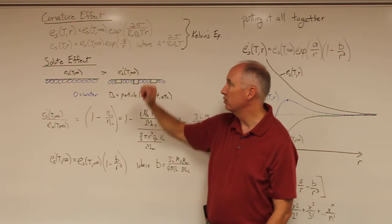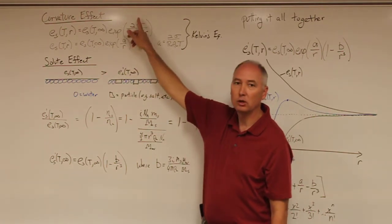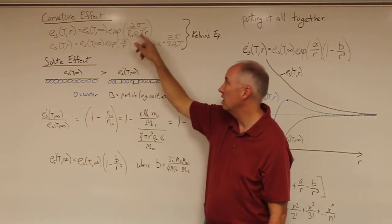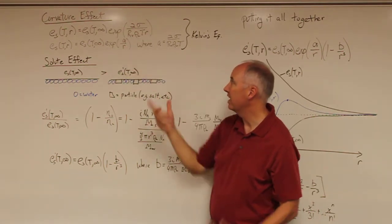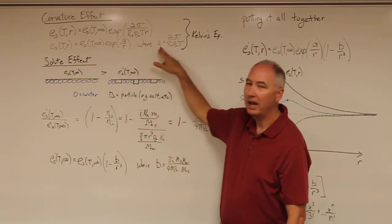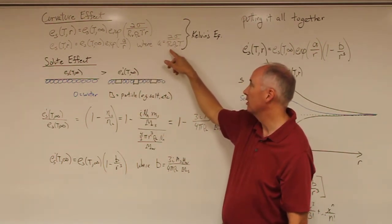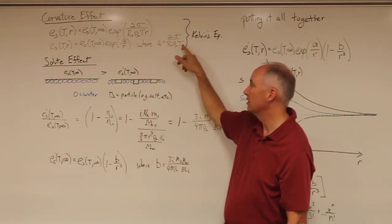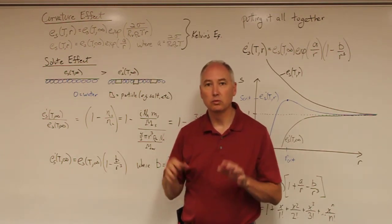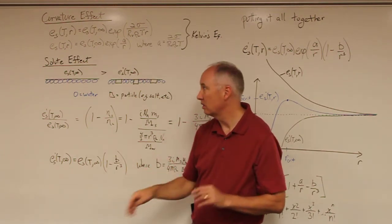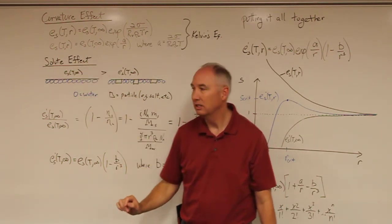What we usually do is replace all of these constants with the constant A, where A is equal to 2 sigma over R sub V rho L times T. And today what we're going to do is introduce the concept of the solute effect.